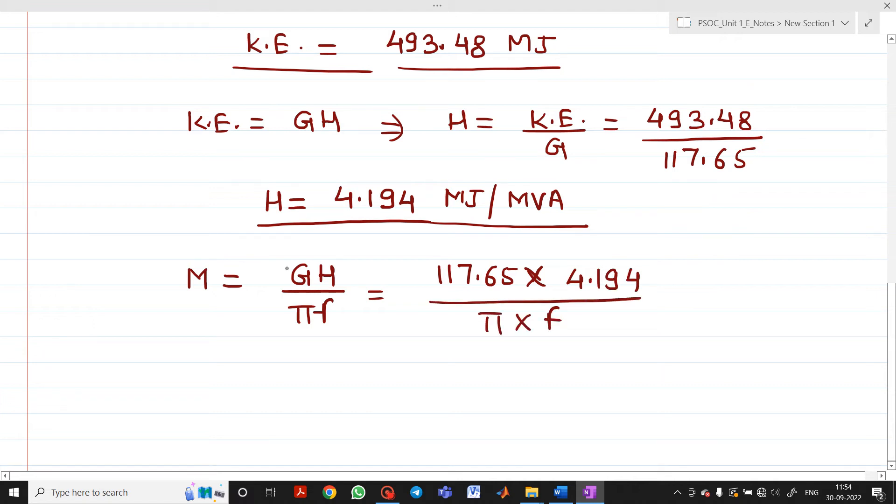When you write this formula, keep the calculator in radian mode. If you calculate in radian mode you will get 3.1412. The unit is mega joule second per electrical radian.